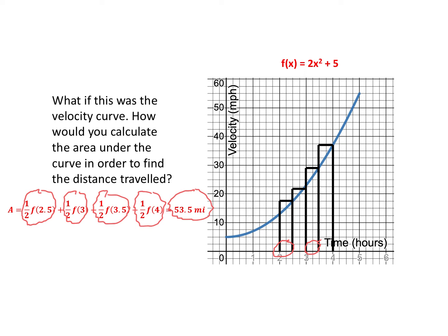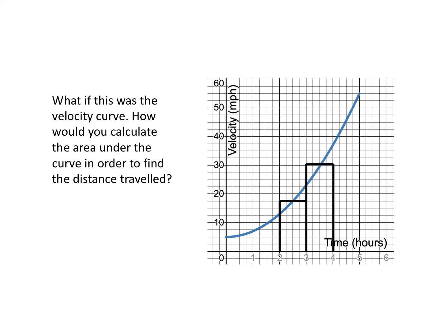Is there a way to get something halfway between these two calculations? Let's place our rectangles so that the curve hits each rectangle at its midpoint — not the left vertex or the right vertex, but right in the middle. This seems like it would be a better approximation, since the pieces above and below the curve might balance out. Two rectangles is not sufficient, so let's increase to four.